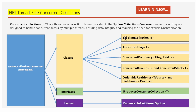Let's talk about the first one: BlockingCollection. Think of BlockingCollection like a well-organized pantry where ingredients are added and taken out in an orderly fashion. If the pantry gets full, chefs wait until there is space. If it's empty, they wait until new ingredients arrive. This ensures everything is managed smoothly without any chaos.